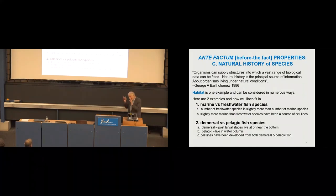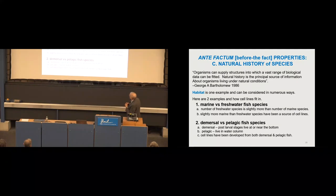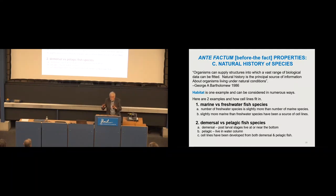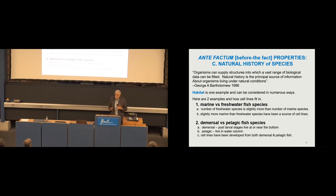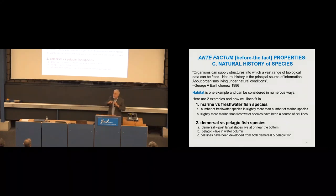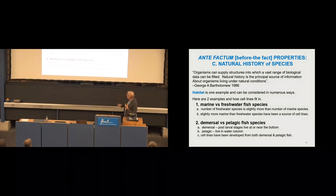So now, and this is actually the one that I want to emphasize, is the natural history of the species. So here I'm going to read a quote: Organisms can supply structures into which a vast range of biological data can be fitted. Natural history is the principal source of information about organisms living under natural conditions. So what I want to stress is, even though fish, all fish live in water, their natural history is tremendously variable and complex. Like how they swim, what they eat, how they have sex. It is just fabulous, actually, in a way. And so I'm just going to use habitat as one example.